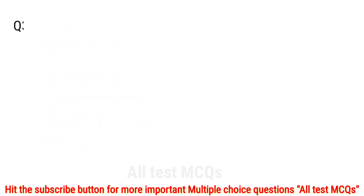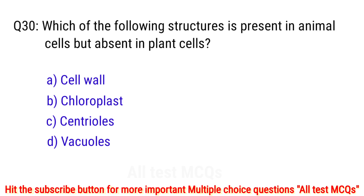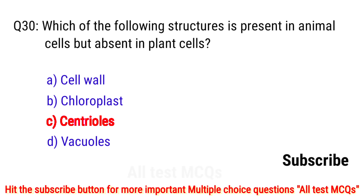Question number 30. Which of the following structures is present in animal cells but absent in plant cells? The correct answer is option C: centrioles.